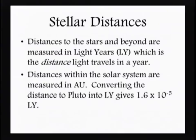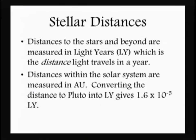Distances in the solar system are measured in astronomical units. Looking at the distance to Pluto, our outermost dwarf planet, that's 1.6 times 10 to the minus 5 light years. So you can see that within our solar system, even at these great distances, that's nothing compared to what we're talking about when we discuss stars. Distances between stars are incredibly large — our neighborhood within the solar system is like being right next to you, like within the same house.